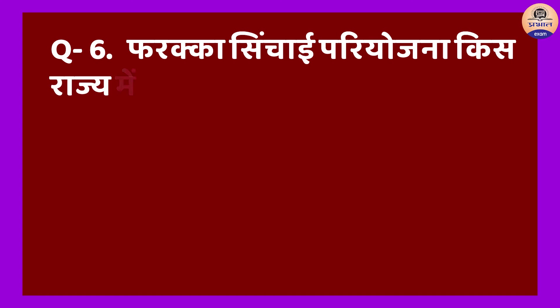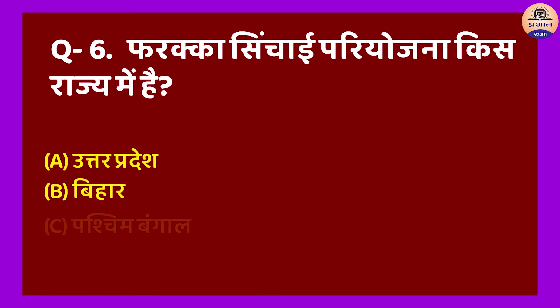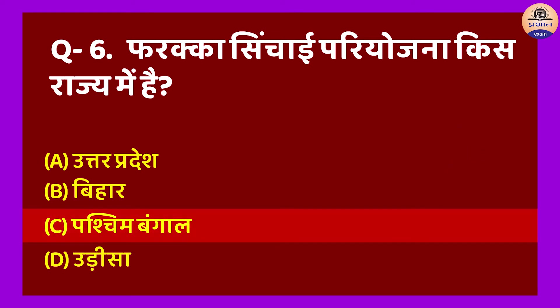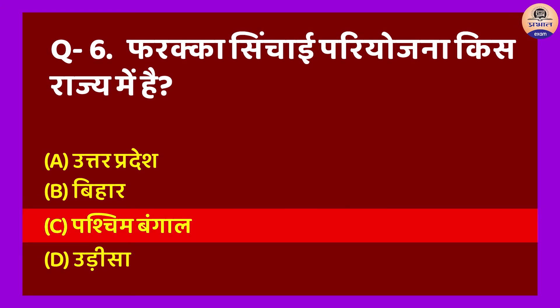Question No. 6: Farakka sinchai pariyojana kis rajya mein hai? A. Uttar Pradesh, B. Bihar, C. Paschim Bengal, D. Odisha. Sahi jawab hoga Option C. Farakka pariyojana Bharat-Bangladesh ki seema par Ganga nadi par Paschim Bengal mein sthit hai. Is pariyojana ka uddeshya Hooghly nadi mein nau parivahan mein sudhar evam Kolkata bandargah ki suraksha evam sthayitva ki raksha karna hai.